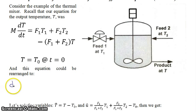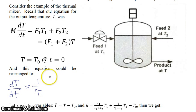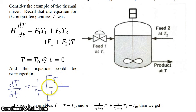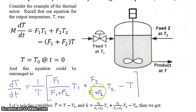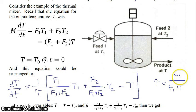The time derivative of temperature is equal to 1 over tau times the quantity: (f1 over f1+f2) times T1, plus (f2 over f1+f2) times T2, minus T; where tau is defined as the mass divided by f1 plus f2.